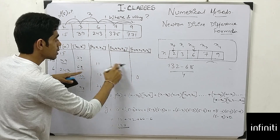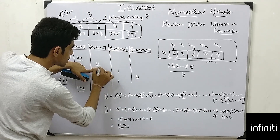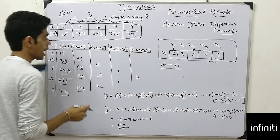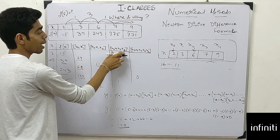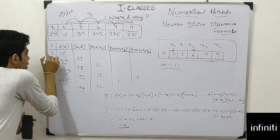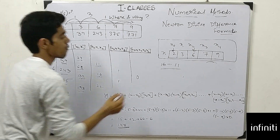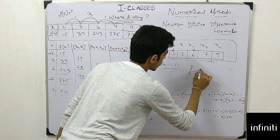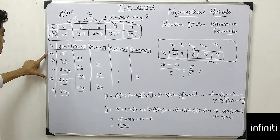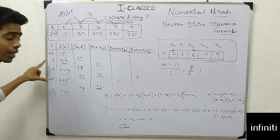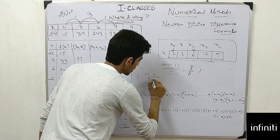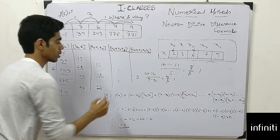Now computing f[x0, x1, x2, x3] — the third divided differences. I subtract 11 from 16, then divide by x3 minus x0. Here x3 is 7 and x0 is 2, so 7 minus 2 is 5, giving 5 divided by 5, which equals 1. Similarly, 22 minus 16 is 6, divided by 9 minus 3, which is 6, giving 6 divided by 6, which equals 1.